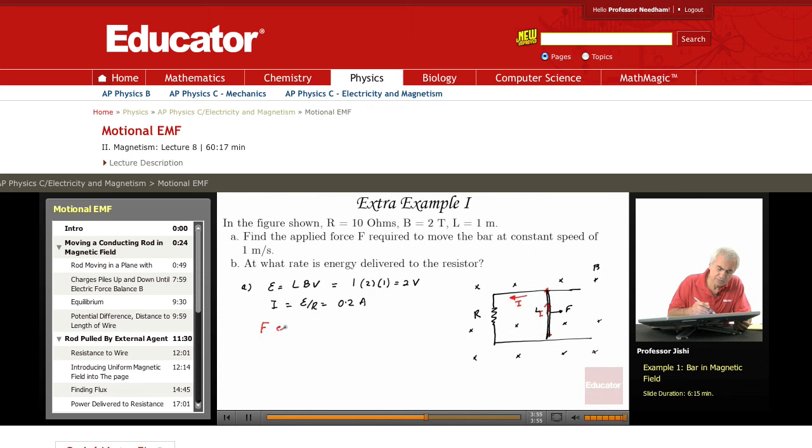Now L and B is into the page, so the angle between them is 90 degrees, so the magnitude of the force is just I·L·B. I is 0.2 amperes, L is 1 meter, and B is 2 Tesla, so this is 0.4 Newtons.